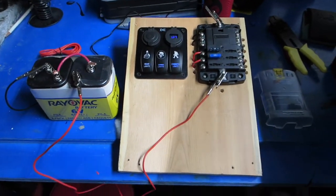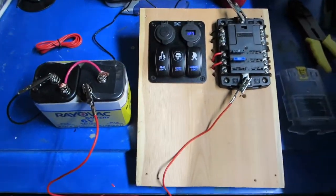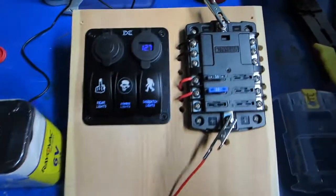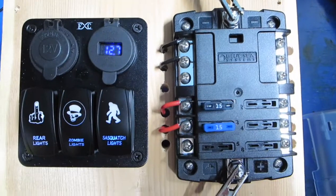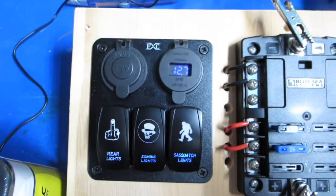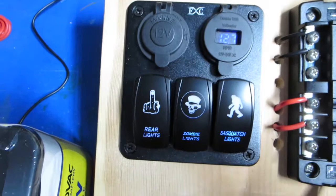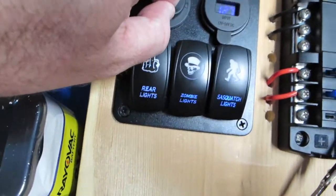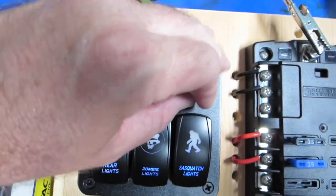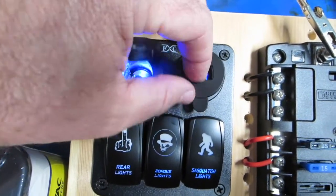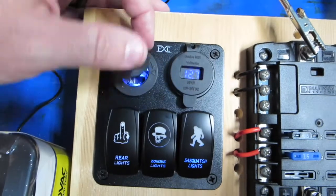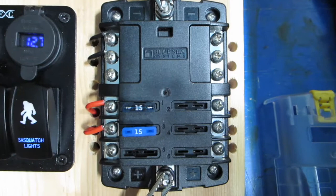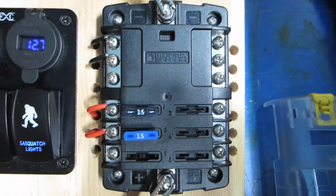Hey, how's it going everybody? Today we're going to try to get my 12-volt all wired up. I got the Blue Sea fuse panel, got the three switches, three power switches with the USB and the cigarette lighter socket. It's a pretty nice little panel from Blue Sea.